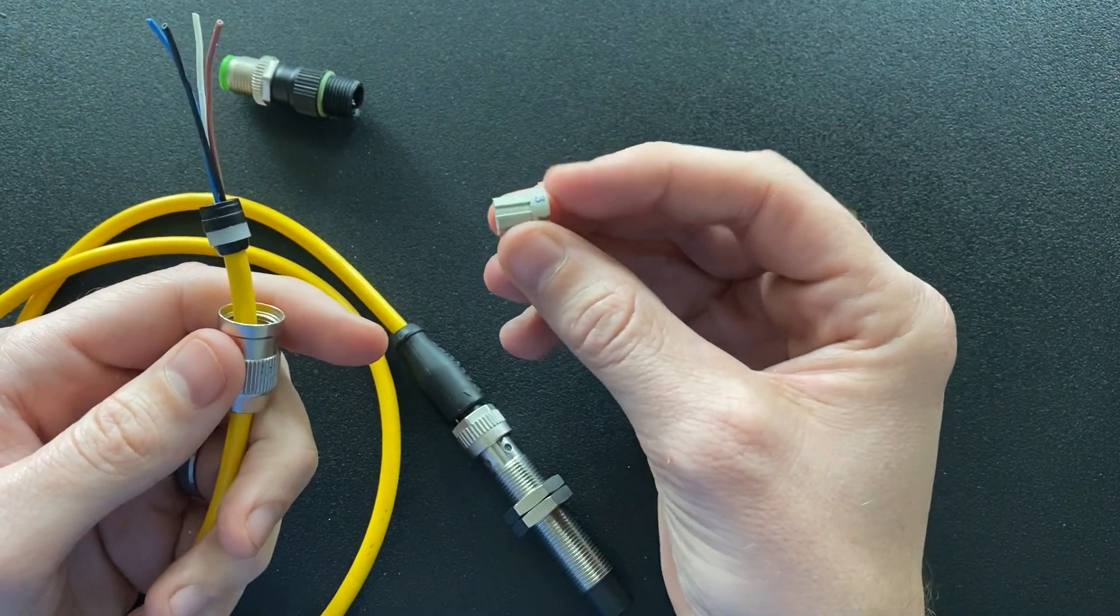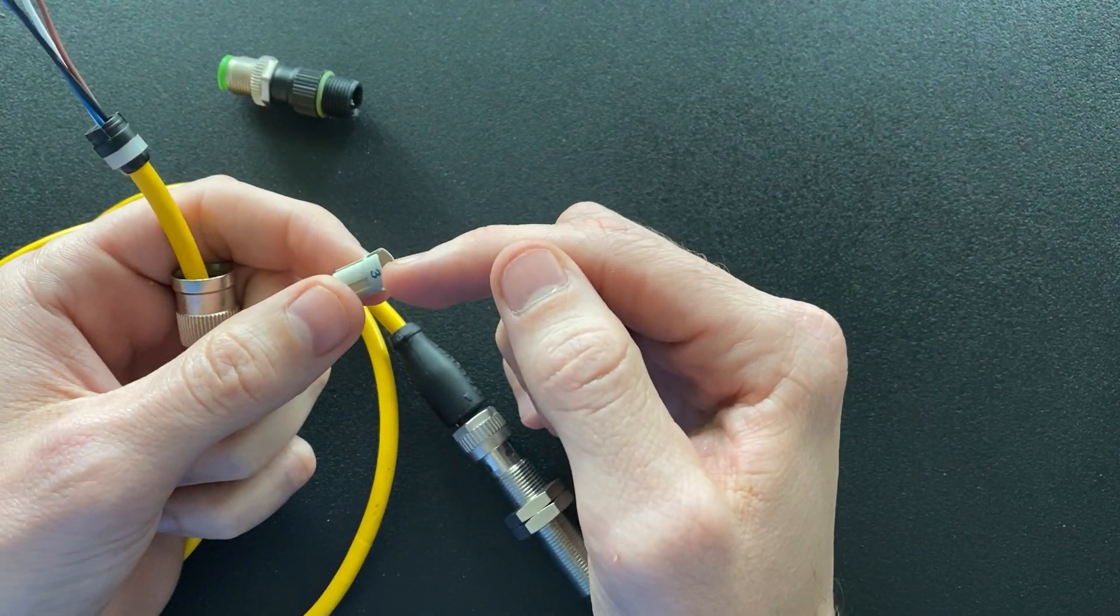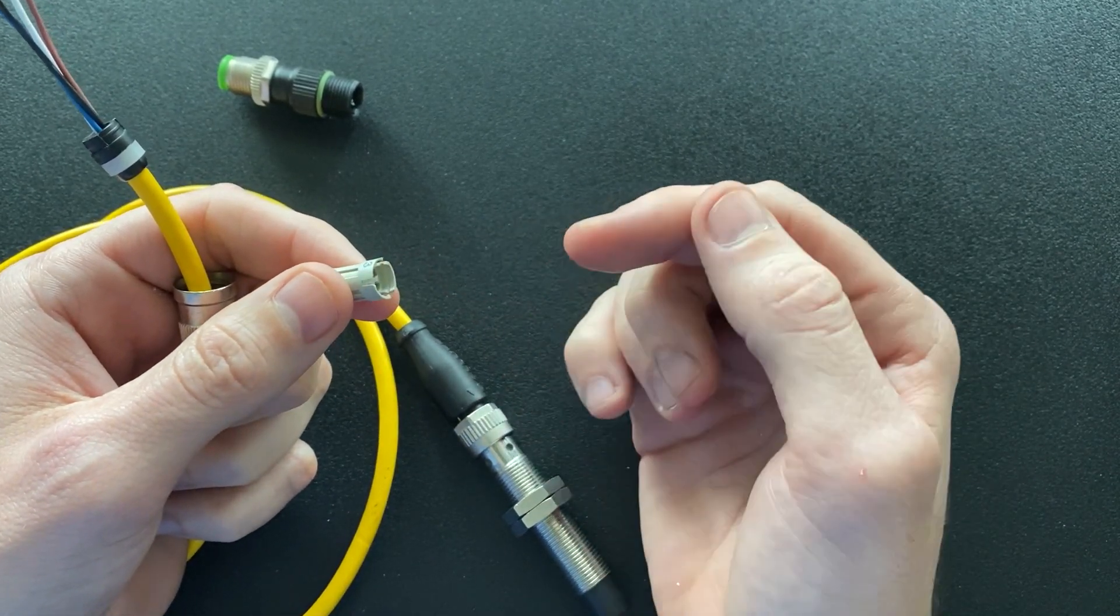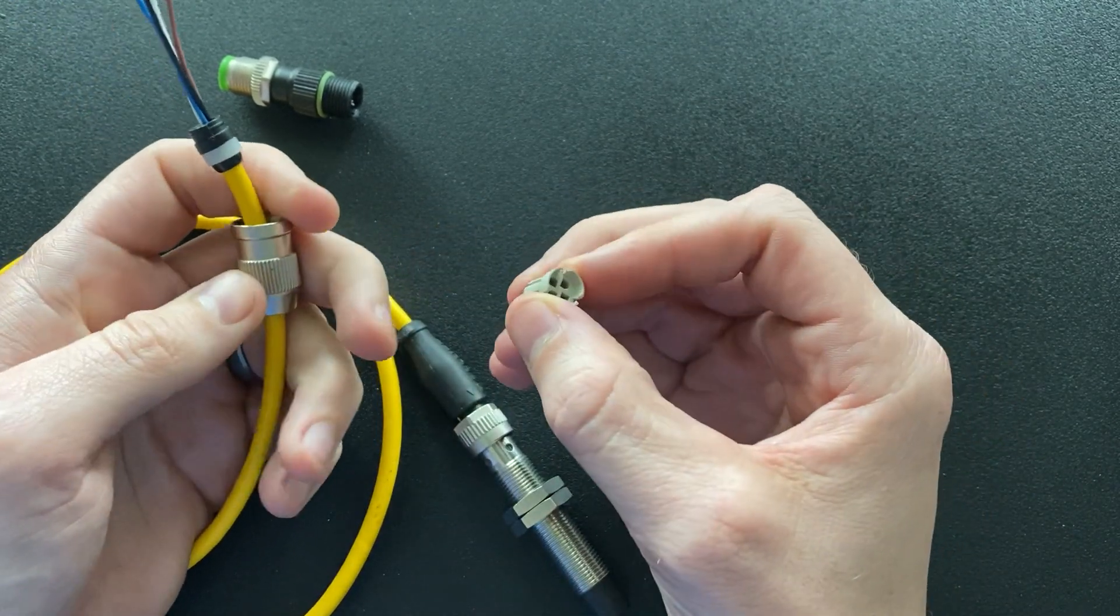Next, you take your contact carrier. What's nice about it is that it's color-coded and numbered. The numbers correspond to the final pin orientation on the connector, while the color coding corresponds with the conductor colors.